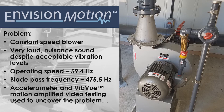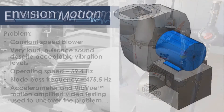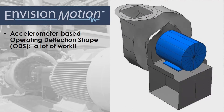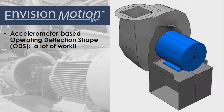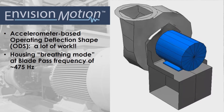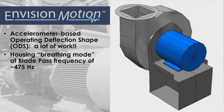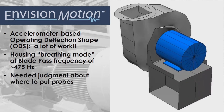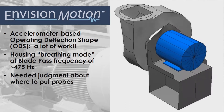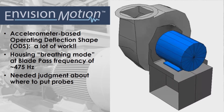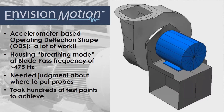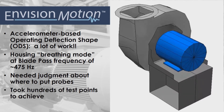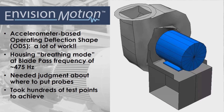Accelerometer and VibeView testing were used to identify the problem. Accelerometer-based operating deflection shape testing compiled accelerometer data from hundreds of points on the blower into a wireframe model. This data was analyzed to find the problem frequency and the motion amplified at this frequency to see the problem mode shape of vibration.